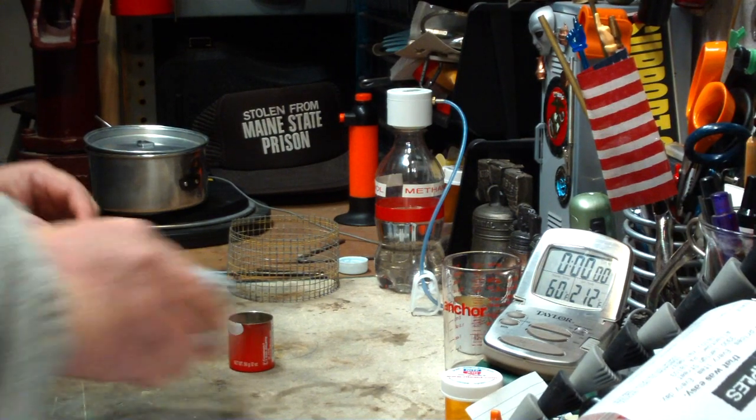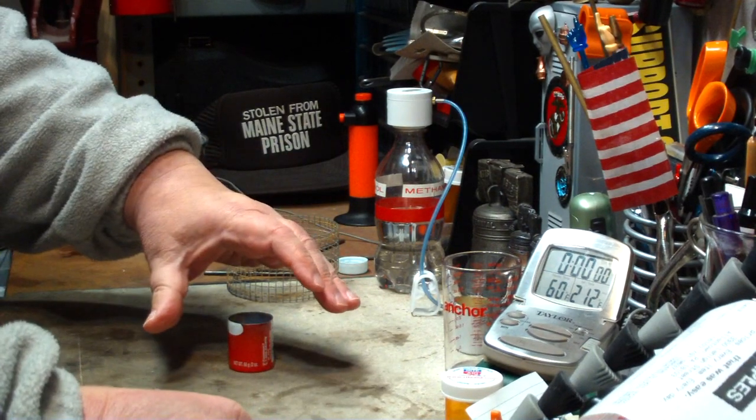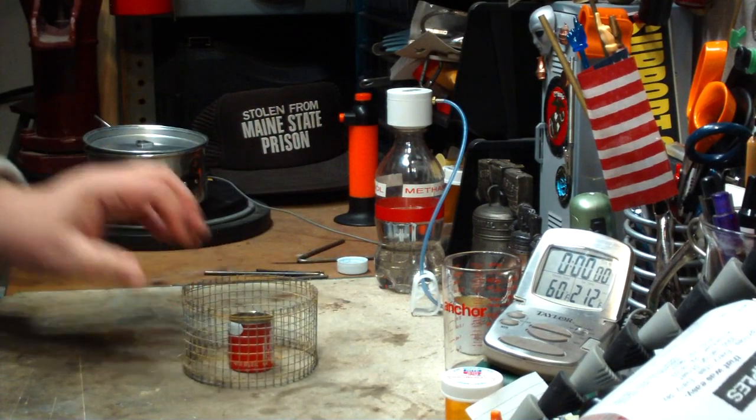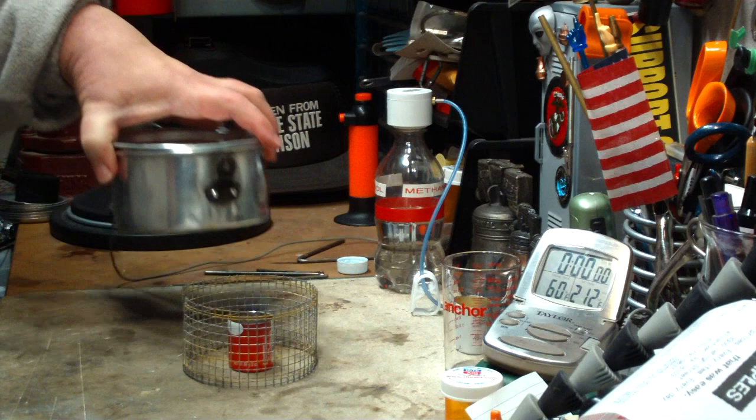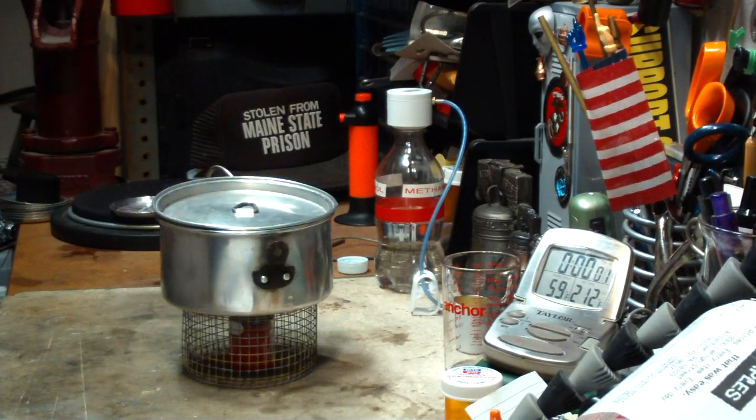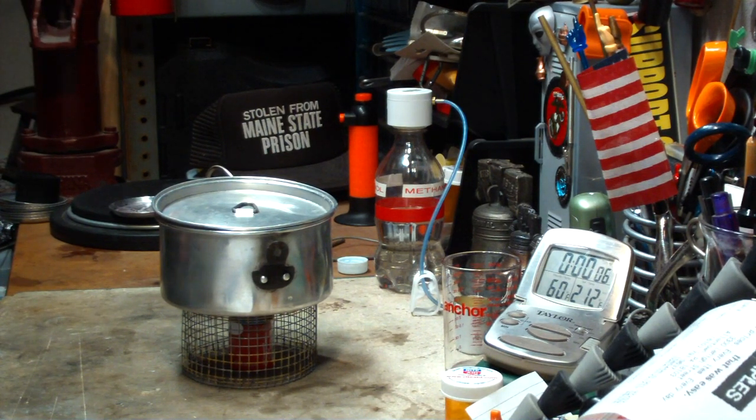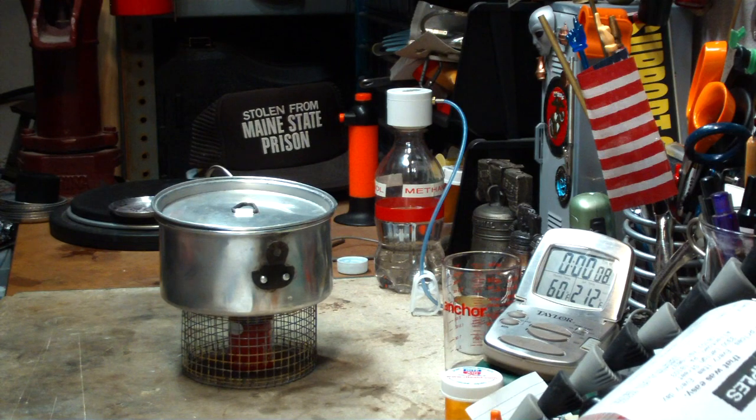Let me light this. Okay, that's lit. Pot stand. Here's two cups of water setting at 60 degrees, 59 degrees. It's right on the verge. So let's say 60 degrees and let's see where it goes from here.